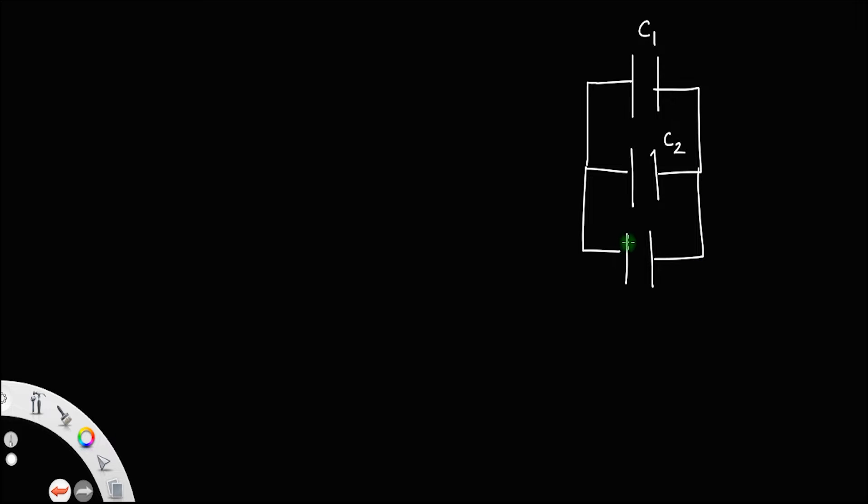Capacitor C3. Let us say C1, C2, C3 represents the capacitance of the capacitor. Instead of calling this as capacitor, these three represents the capacitance.